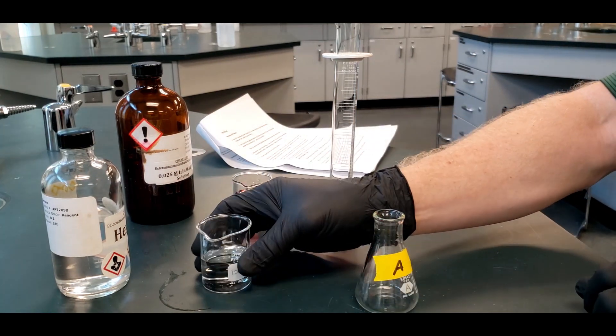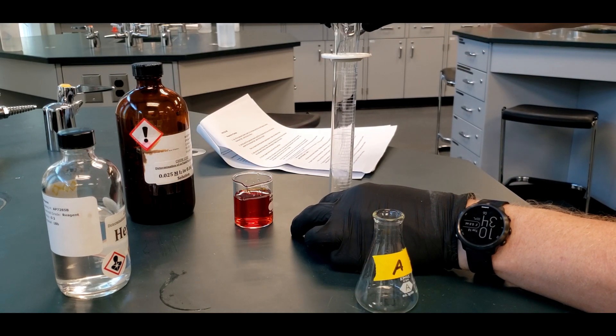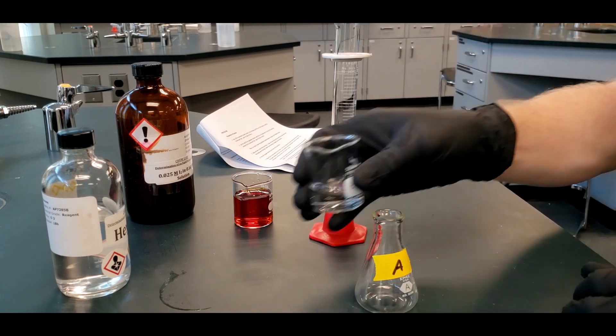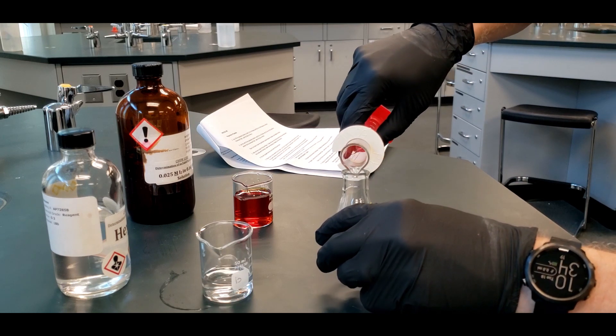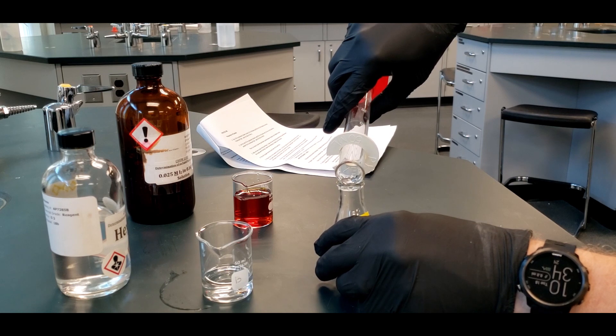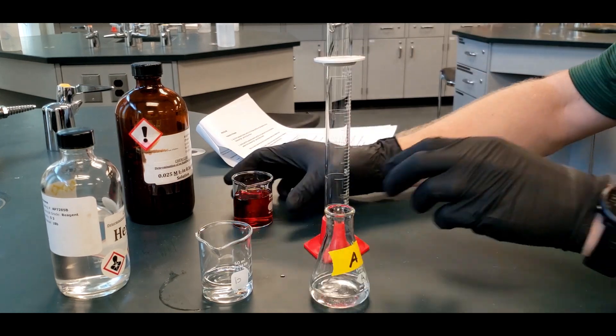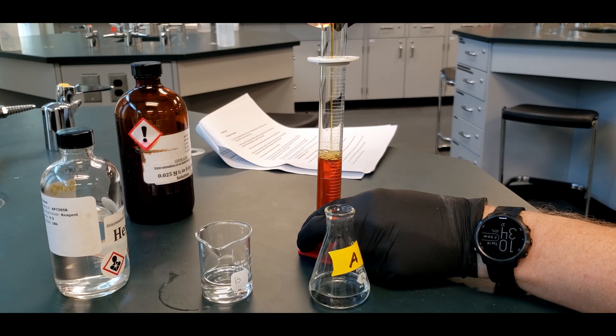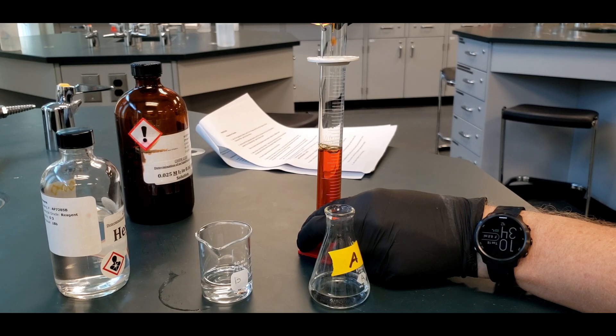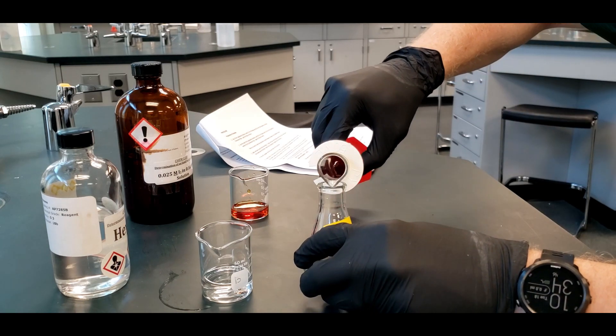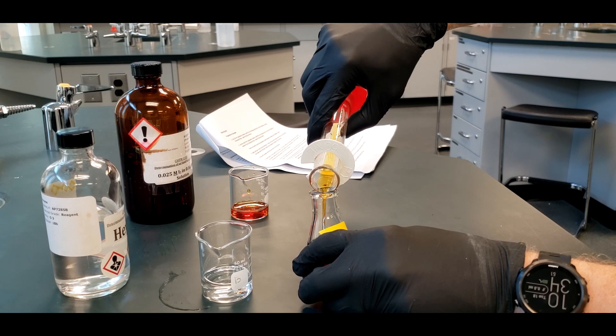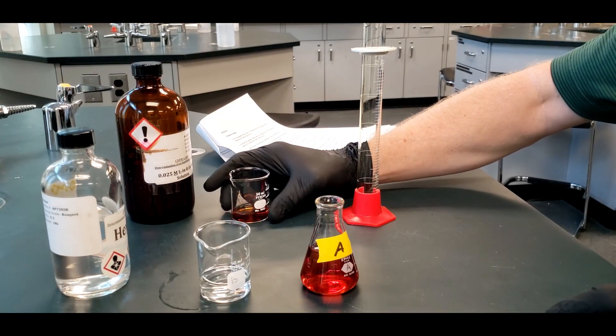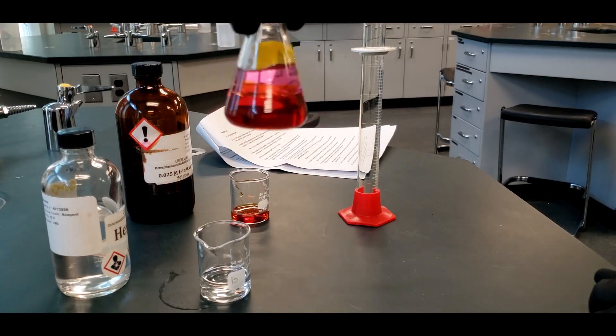Alright, so we need 15 mL of hexane. That goes in here. And then we need 30 mL of the iodine, potassium iodide solution. You should see this is hexane, so that's non-polar, and this is an aqueous solution. So there is going to be a layer. You can see that.